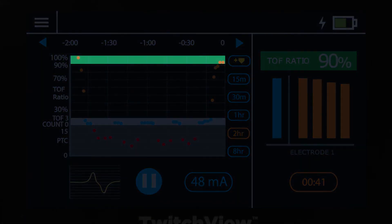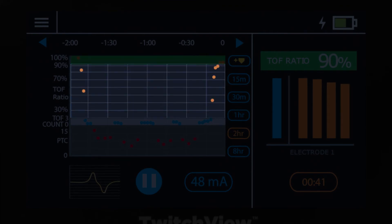A plot in the green portion of the chart represents a TRAIN-4 ratio of 90% or greater. A point in black represents a TRAIN-4 count of 4 with a TRAIN-4 ratio below 90%.